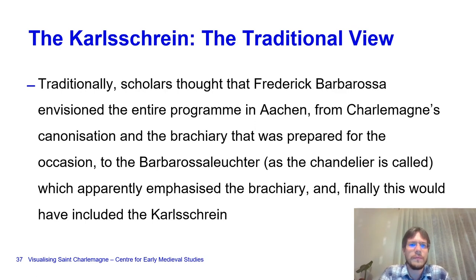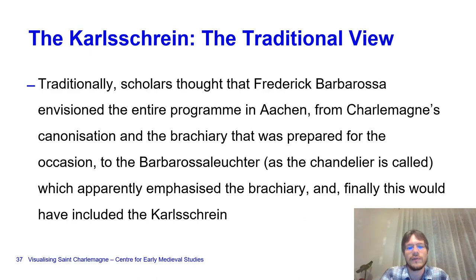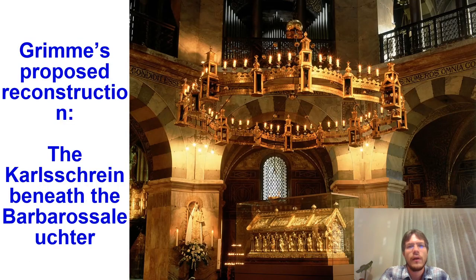The traditional view is that Frederick Barbarossa envisioned the entire program in Aachen: from Charlemagne's canonization and the brackery prepared for the occasion, to the Barbarossa Leuchter which apparently emphasized the brackery, and finally the Karl Shrine. This would have been a pretty big plan working over about 50 years, from 1165 to 1215, when it was finally accomplished.